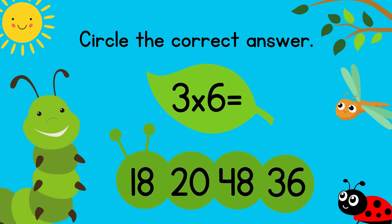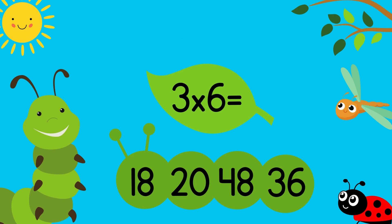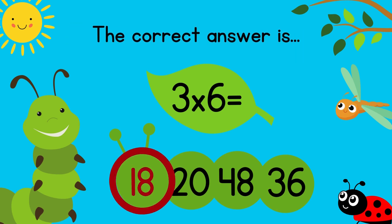Circle the correct answer: 3 times 6 equals? The correct answer is 18. Excellent!